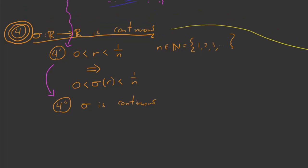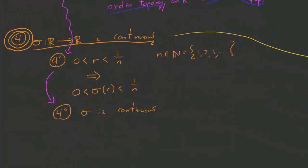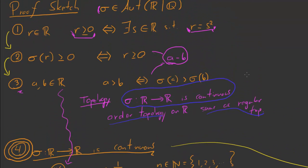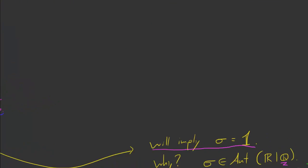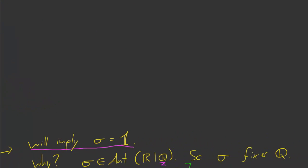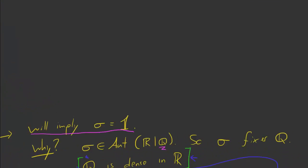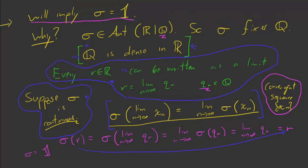So, the whole game here, this entire time, was to show that sigma is continuous. And I claim that if you follow these four steps, then you'll be able to do that. And that will, just as we said over here, be enough to imply that sigma is the identity, which is what we want to do.